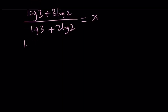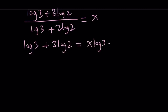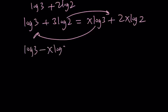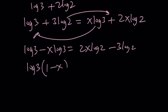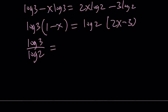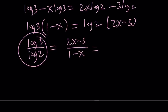From here we're going to cross-multiply and solve. Cross-multiplying gives x log 3 plus 2x log 2. Bringing log 3 terms together and log 2 terms together gives log 3 minus x log 3 equals 2x log 2 minus 3 log 2. Factoring out log 3 gives 1 minus x, and factoring out log 2 gives 2x minus 3. Dividing both sides by log 2 and by 1 minus x, we get log 3 over log 2 equals 2x minus 3 over 1 minus x. By change of base, this is equivalent to log 3 with base 2, giving us the answer.